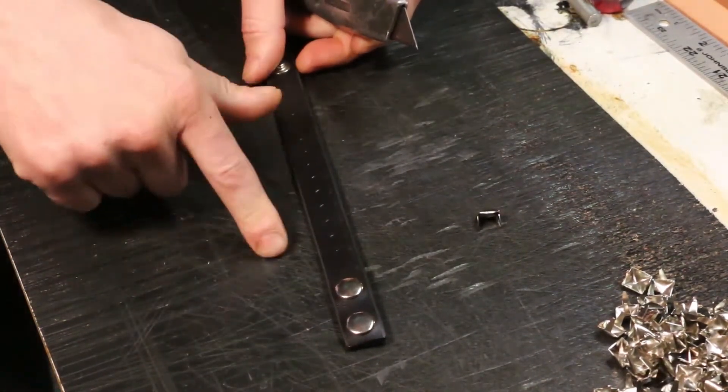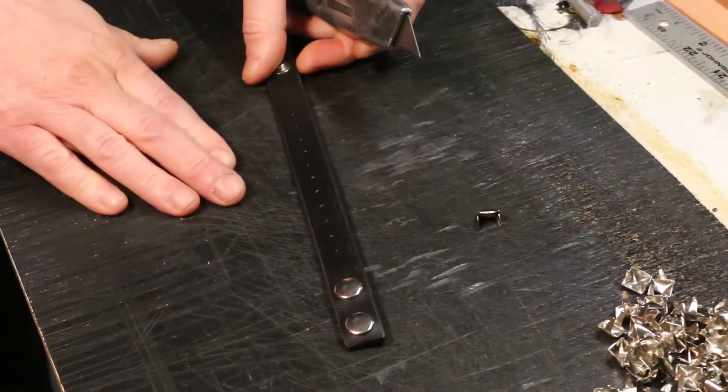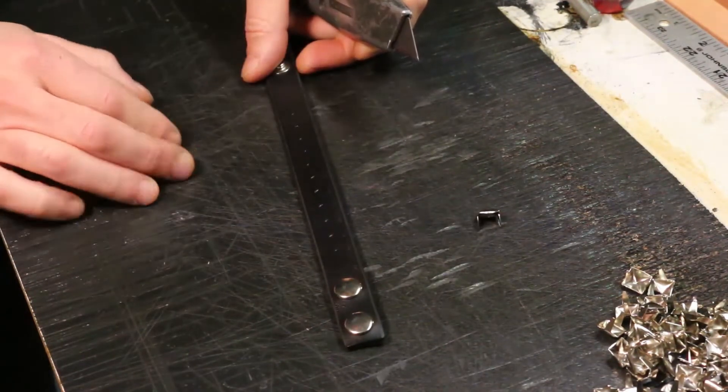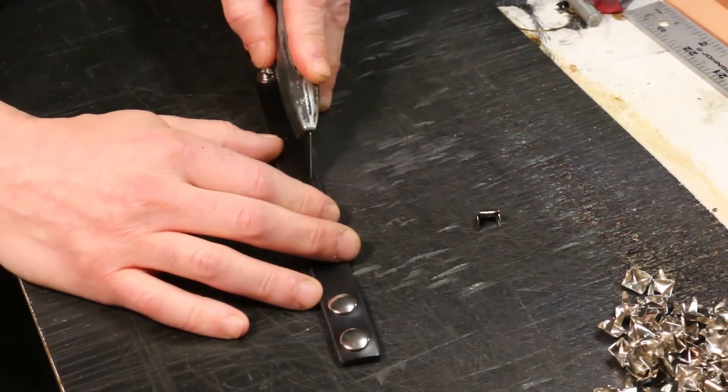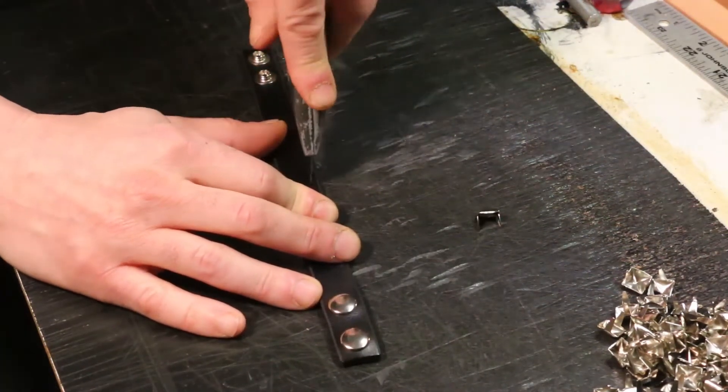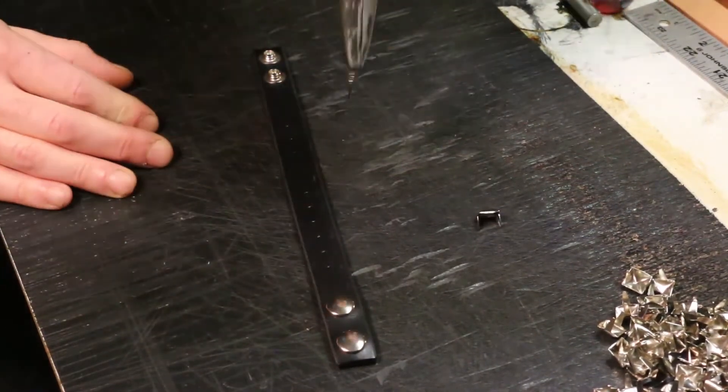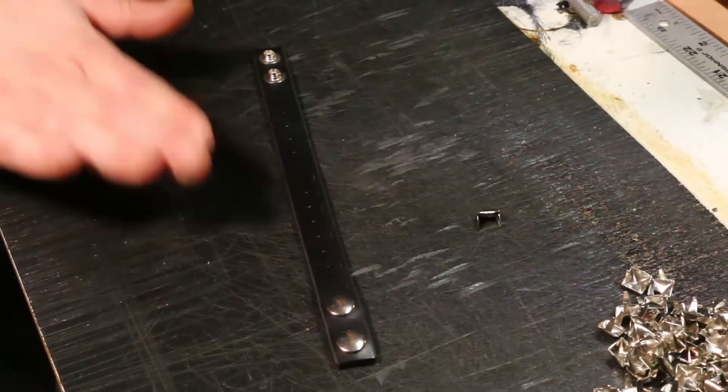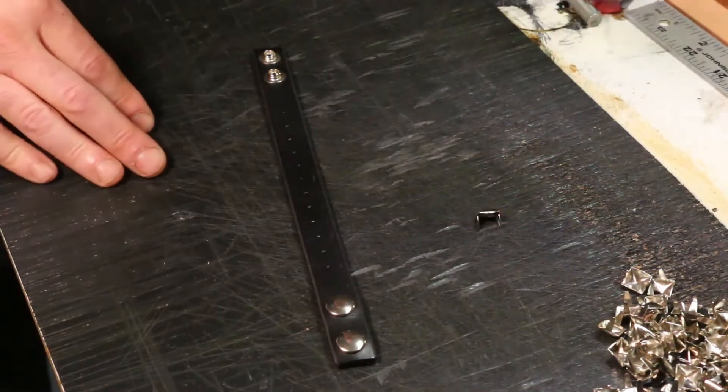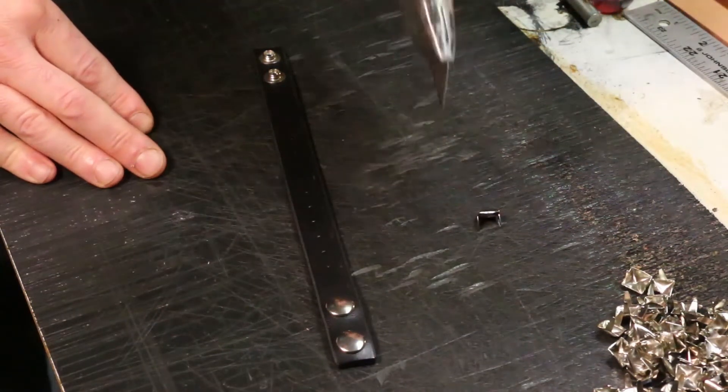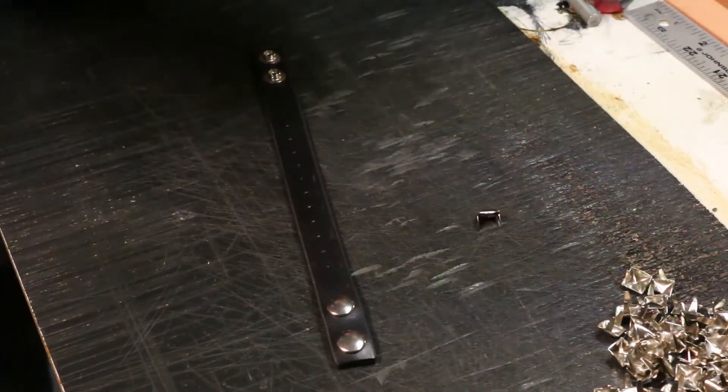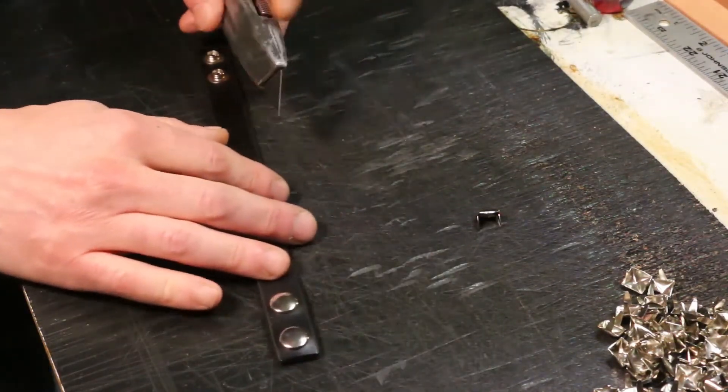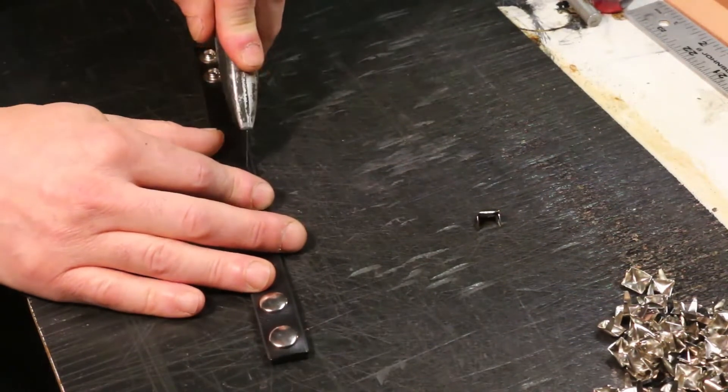Also pay attention, I'm using a rubber pad. If you don't have something like this, you can just stack up some extra leather. But it's very important that you have something underneath there because the blade has to pass through. If it's a hard surface and the blade can't go any further, you're just going to have a tiny pinprick opening on the underside, and that's going to make your prongs very difficult to set.